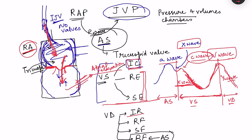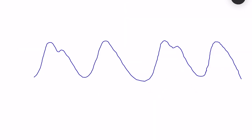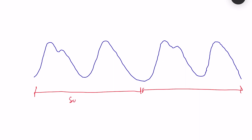That covers the basic waveforms of the JVP. Let us see a mnemonic to remember these waveforms. In a single cardiac cycle, we see various waves: A wave, C wave, X wave, V wave, and Y wave. A, C, and V are positive waves — pressure increasing — while X and Y are negative waves — pressure decreasing.